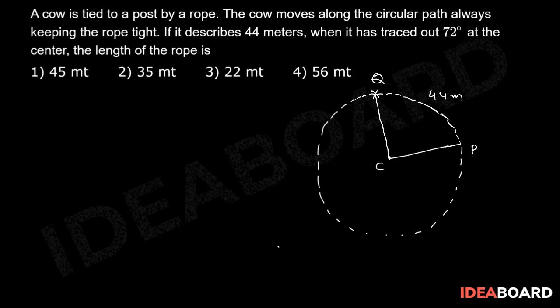The arc PQ sustains an angle of 72 degrees at the center of the circular path. CP is the length of the rope, denoted by small r.